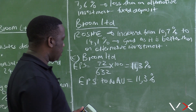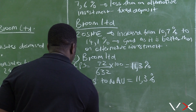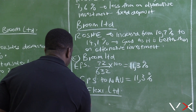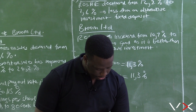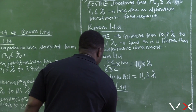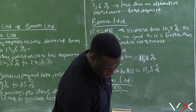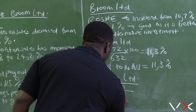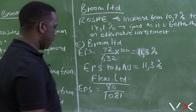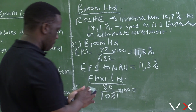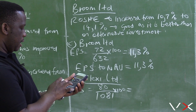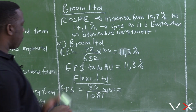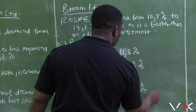Now comparing to Flexi Ltd: their earnings per share is 80 cents and their net asset value per share is 1,081. So EPS to NAV equals 80 over 1,081 times 100, which equals 7.4 percent.